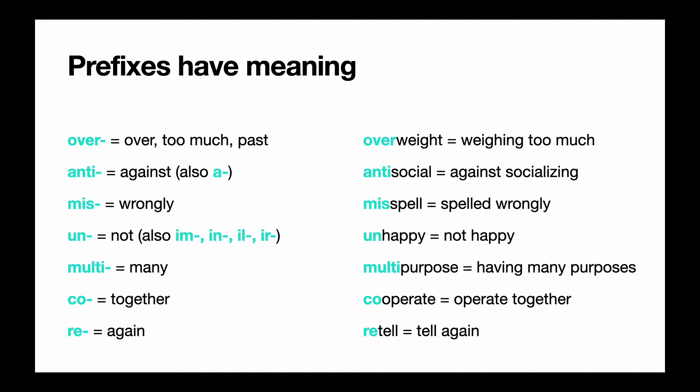'Mis' is a common prefix that means wrongly. So if you misspell something, you have spelled it wrongly, incorrectly. 'Un' means not — and we have several prefixes that mean not — so unhappy means not happy. 'Multi' means many, so multipurpose is something that has many purposes. 'Co' means together, so cooperate means to operate together, to work together. 'Re' is again, so retell is to tell something again.